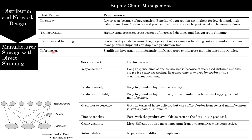From a service perspective, response times tend to be long — at least one to two weeks — because of increased distance and two stages of order processing. Product variety is high and easy to provide. Product availability is also high due to aggregation at the manufacturer. Customer experience is good in terms of home delivery but can suffer if an order from several manufacturers is sent in partial shipments. Time to market is fast with the product available as soon as the first unit is produced. Order visibility is difficult but important from a customer service perspective. Returnability is expensive and quite difficult to implement.